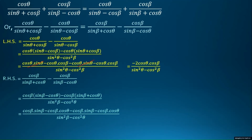Now, if there are same numbers with different signs we can cancel them. There is cos θ · sin θ positive and cos θ · sin θ negative — we can cancel these. The remaining two terms have the same sign, so they are added, giving us −2cos²θ in the numerator and sin²θ − cos²θ in the denominator. We can now compare the denominators of the left hand side and right hand side.